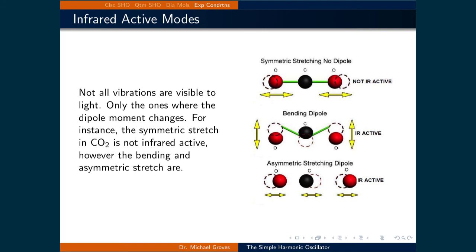More generally, for larger molecules, it's important to note that not all vibrations are visible to infrared probes. Vibrations where there is no change to the dipole moment of the molecule are invisible. In this example with the CO2 molecule, only the modes that change the dipole moment—the bending and asymmetric stretch—are visible.